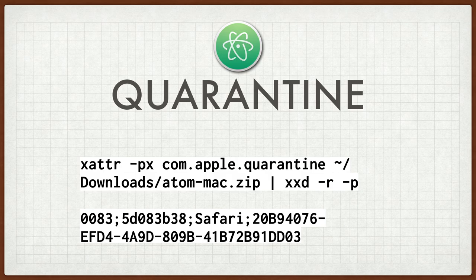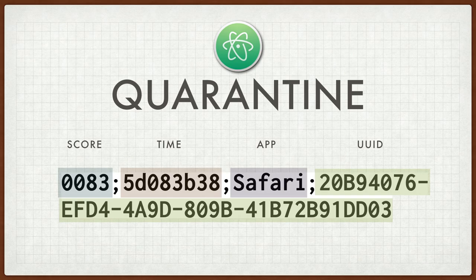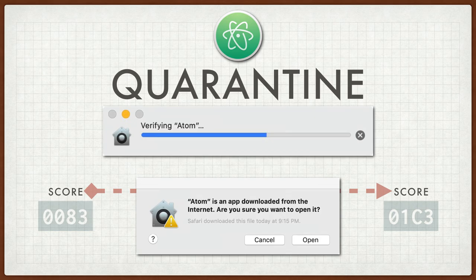Now let's look at the quarantine object the same way. We're piping it through xattr and xxd to actually take a look at the structure there. We get a whole bunch of related information about this download. We get a security score that determines how the operating system handles the file as a whole. In this case it's 0083, which indicates that the file will be scanned before it's opened. We get a timestamp in hex, the application that downloaded the file and applied the quarantine information, and a UUID that provides a unique stamp to identify just this file. As our score was 0083, that indicates no quarantine check has been performed — the high order bit there says 00 — and the app has not yet been opened, which is the 83 side.